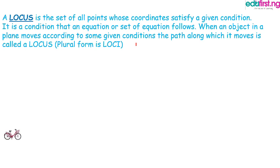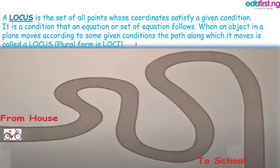For example, on your birthday your dad bought a nice bicycle for you. On your way to school you decide to ride the bicycle. You move left, right, left, right, you keep moving until you get to school. The path through which you navigate with your bicycle from the house to school is called the locus.